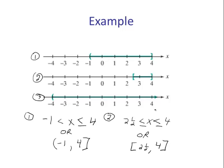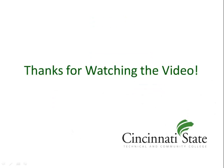Number three: the numbers from negative four going to positive infinity — all numbers greater than negative four. So we write X > −4 without an equal sign because that's an open circle. In interval notation, we write (−4, ∞) — parenthesis because it doesn't equal negative four, comma, positive infinity, parenthesis because we can never equal positive infinity. Thanks for watching.